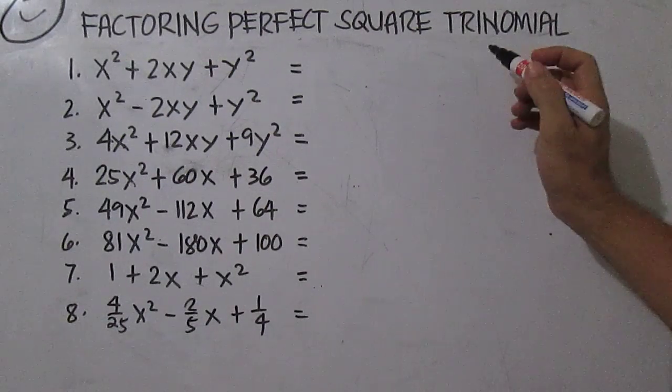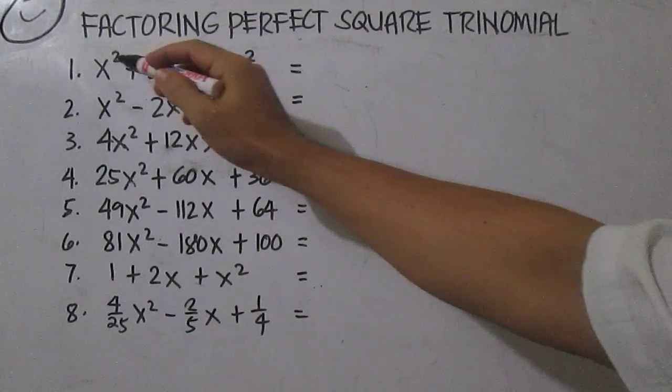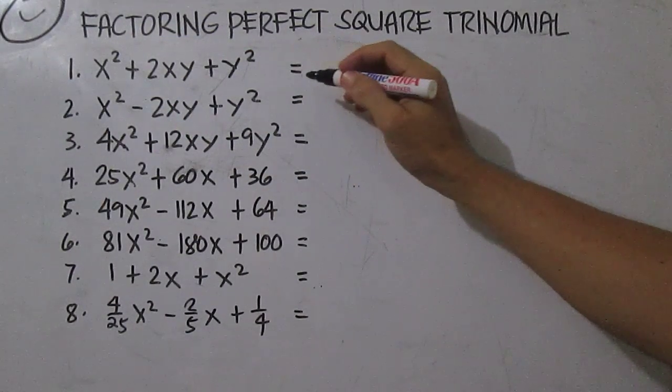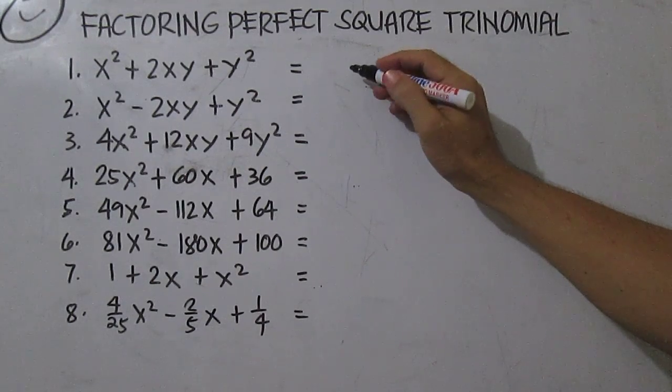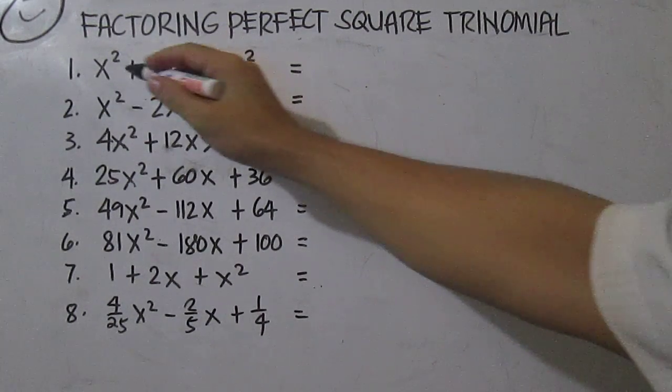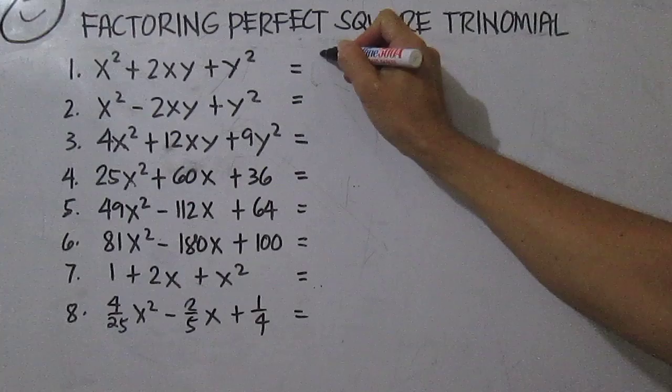To factor a perfect square polynomial, find the square root of the first term and the third term, then write as a square of the sum of two terms. For number one, the square root of x squared is x.